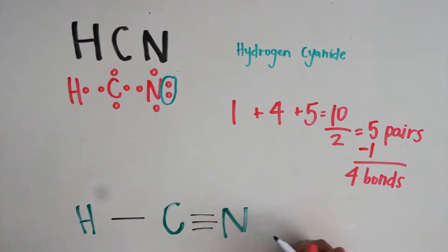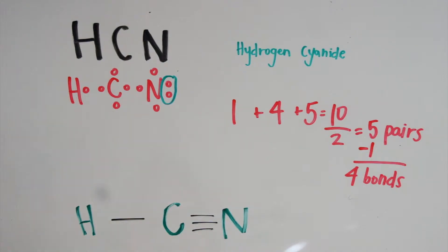This follows the rule of octet. Each line represents 2 electrons. This is your Lewis dot structure for hydrogen, carbon, nitrogen.